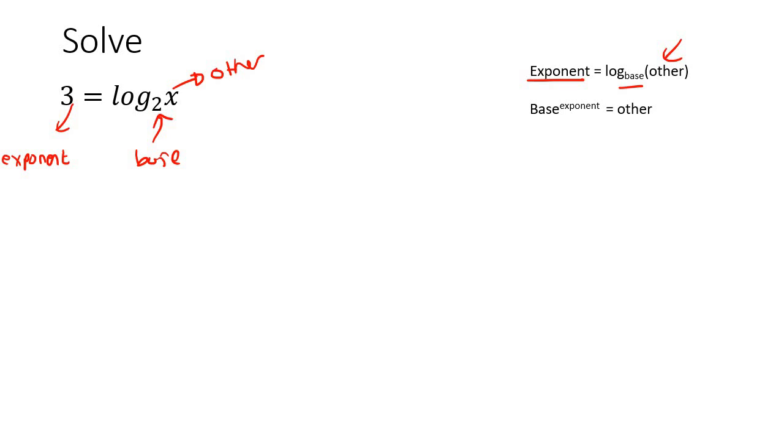Now if we want to rewrite that as an exponential then what we would do is start with the base which is 2, then you take the exponent which is 3, and then the other is x. Now you can actually find x. You see x is over here by itself. So you just have to literally figure out what is 2 to the power of 3. Well that's going to be 8 and so there's the answer. X is 8.